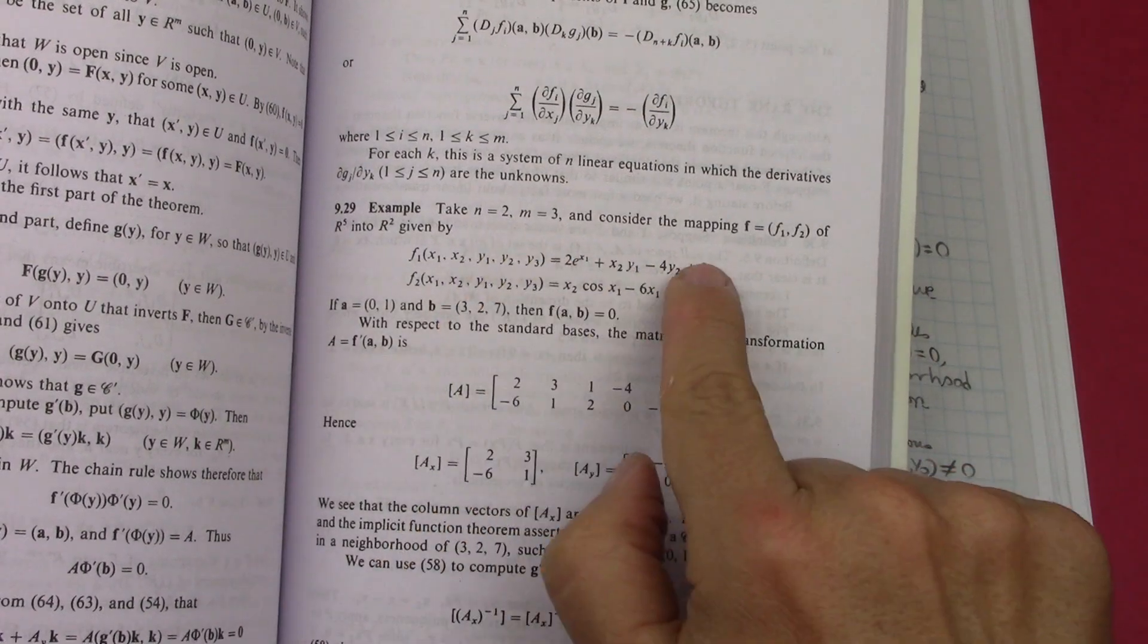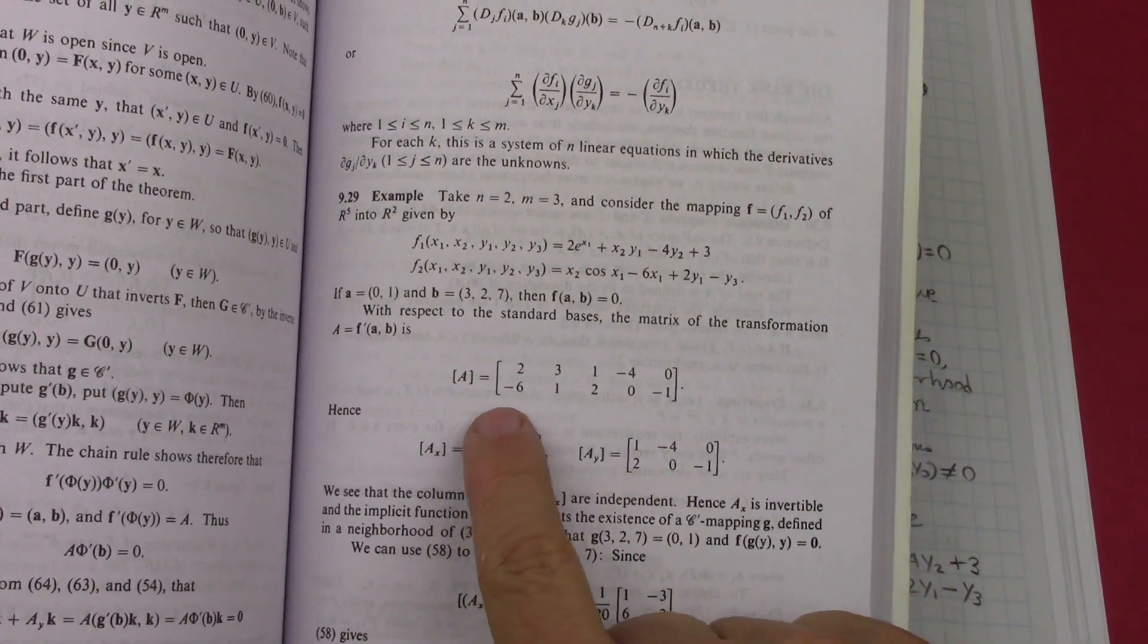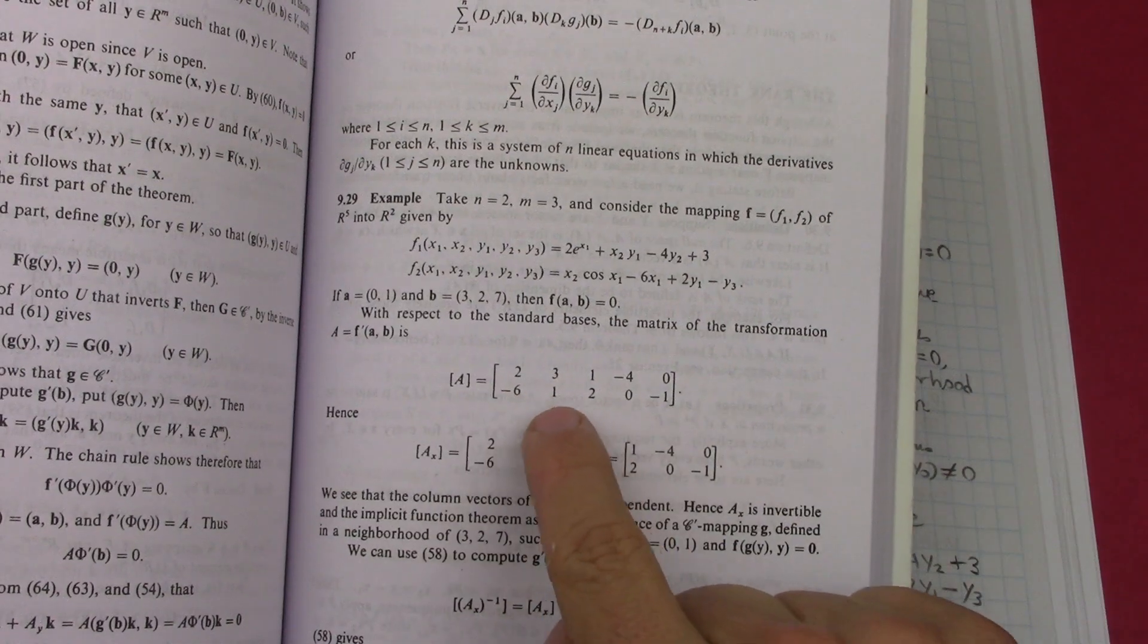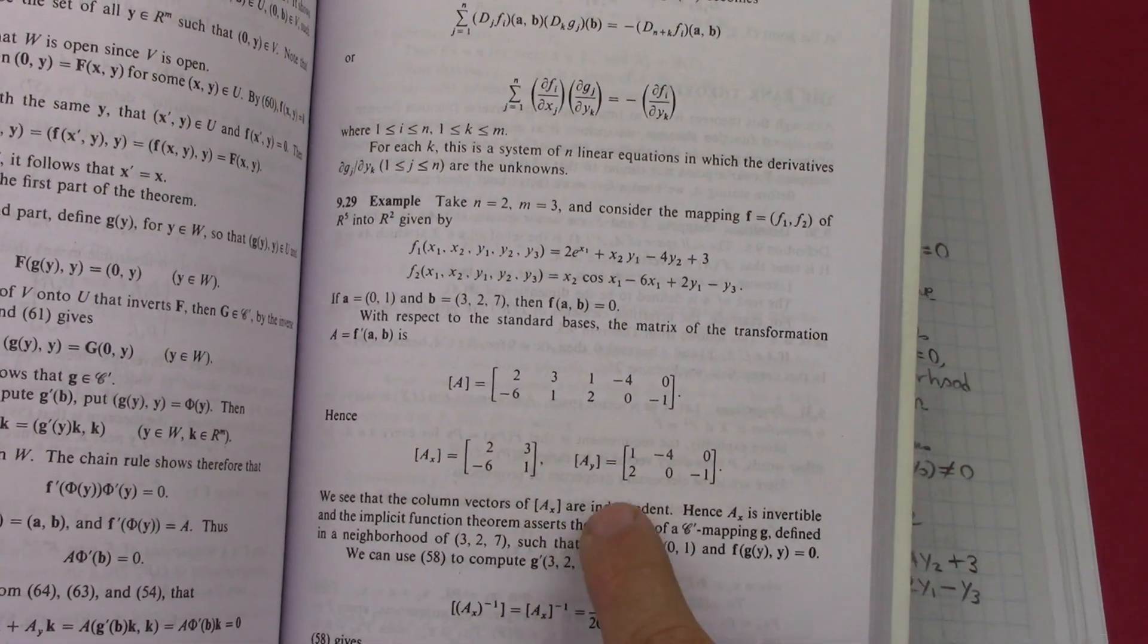Then you take the x₁, x₂ sub-matrix and you can invert it, so it's invertible.